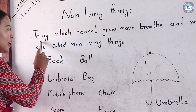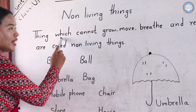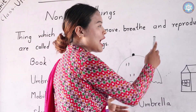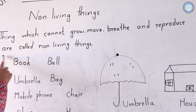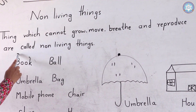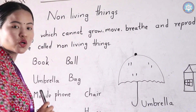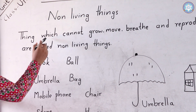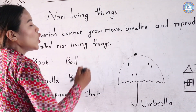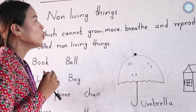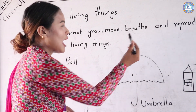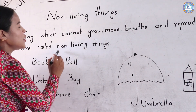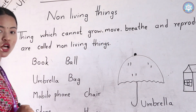Now we are going to learn about non-living things. Things which cannot grow, move, breathe, and reproduce are called non-living things. Now your turn — repeat this: things which cannot grow, move, breathe, and reproduce are called non-living things.